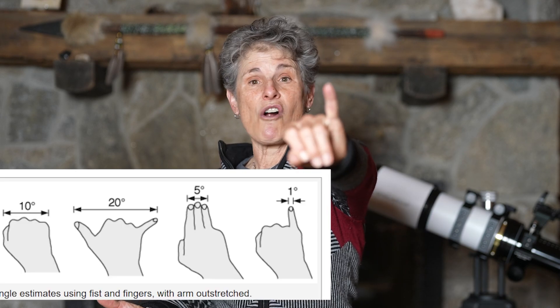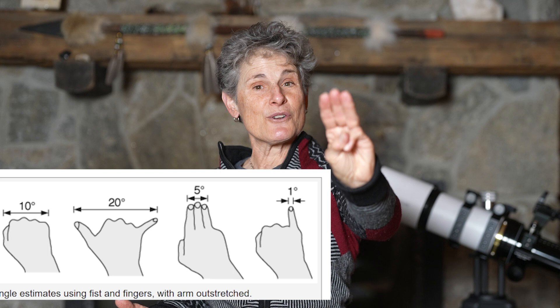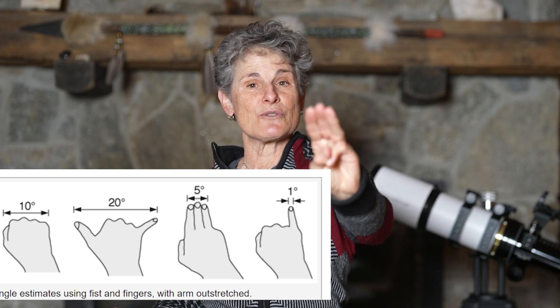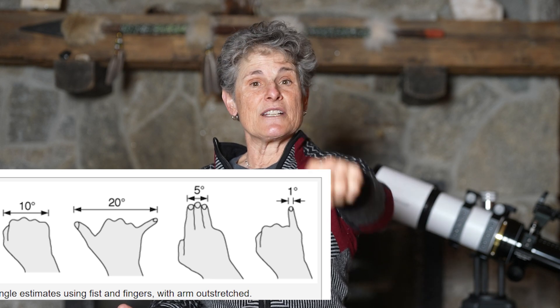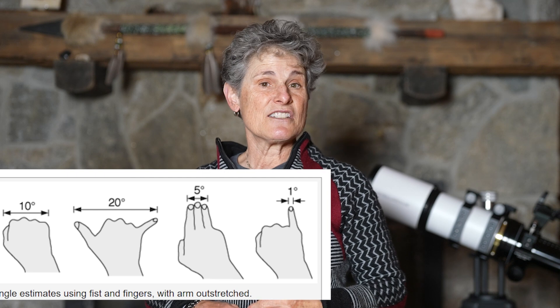Now raise your arm directly overhead — that's the zenith, and that's 90 degrees. And halfway would be 45 degrees. You can conveniently measure these distances with your own hands, because your pinky finger on your extended arm is one degree, three fingers on an extended arm is five degrees, your fist is ten degrees, the distance between your index and your pinky finger is 15 degrees, and the distance between your thumb and your pinky finger is 25 degrees.